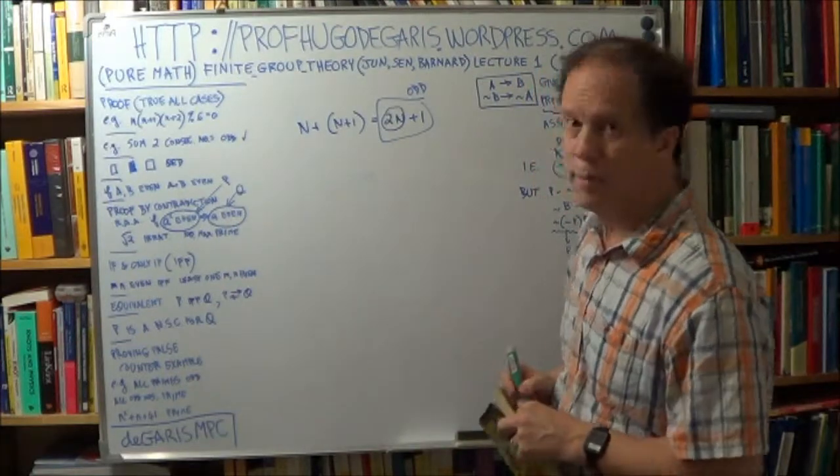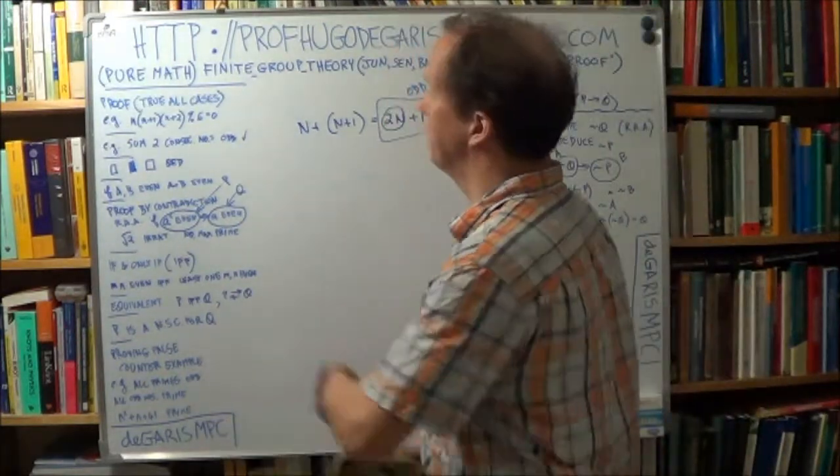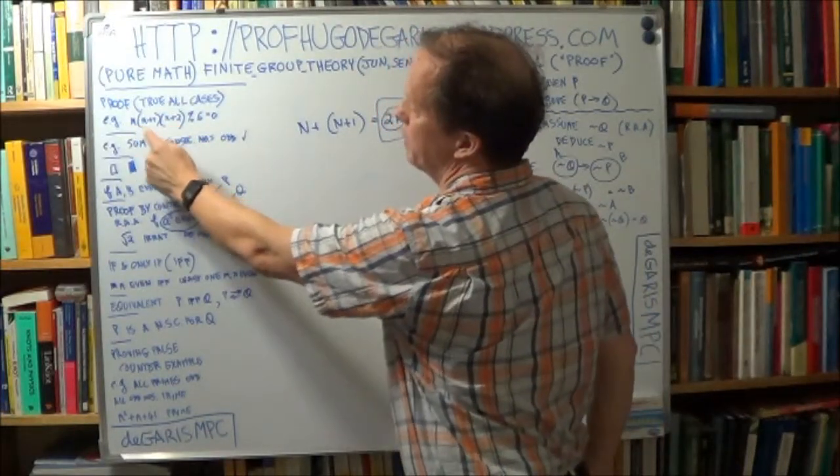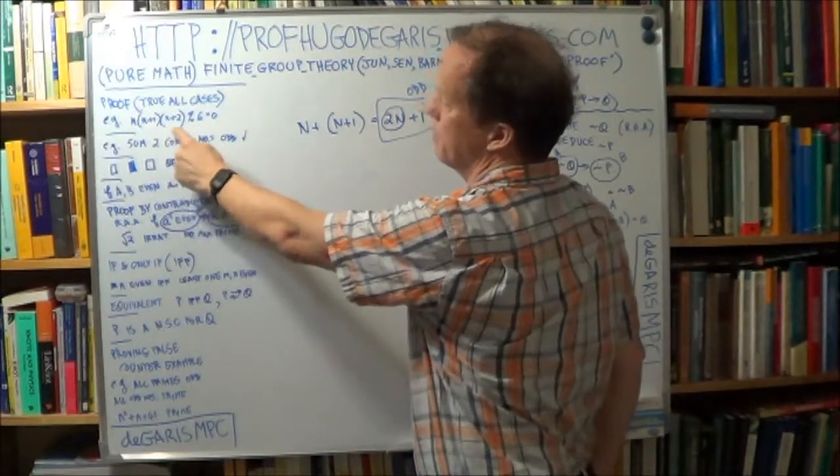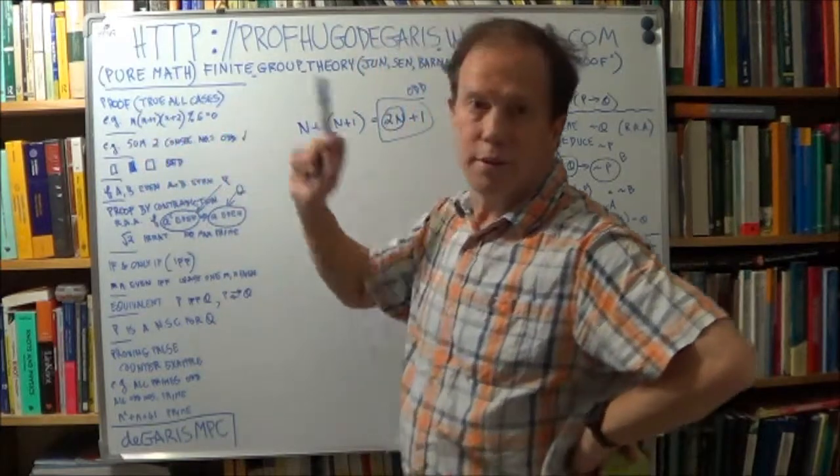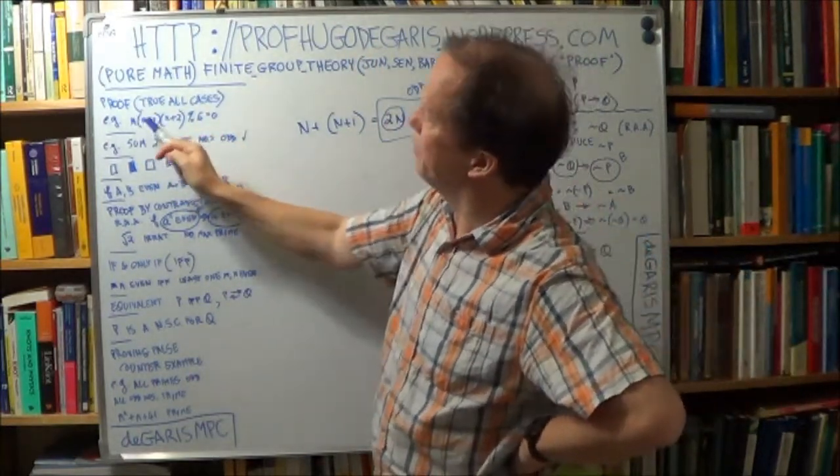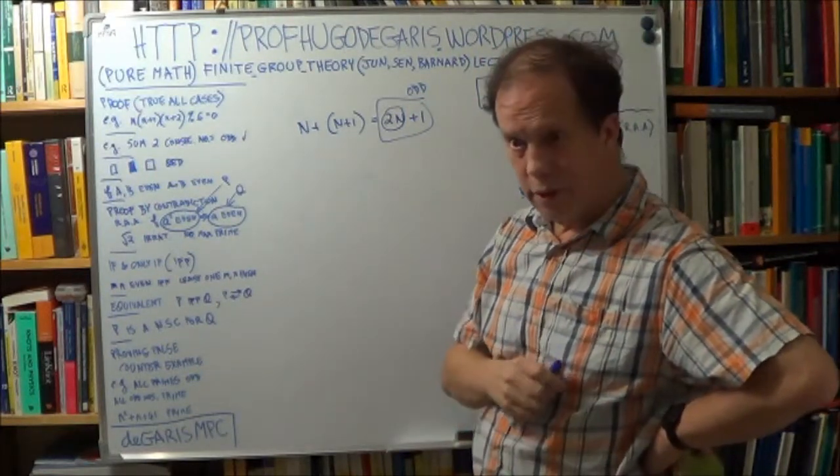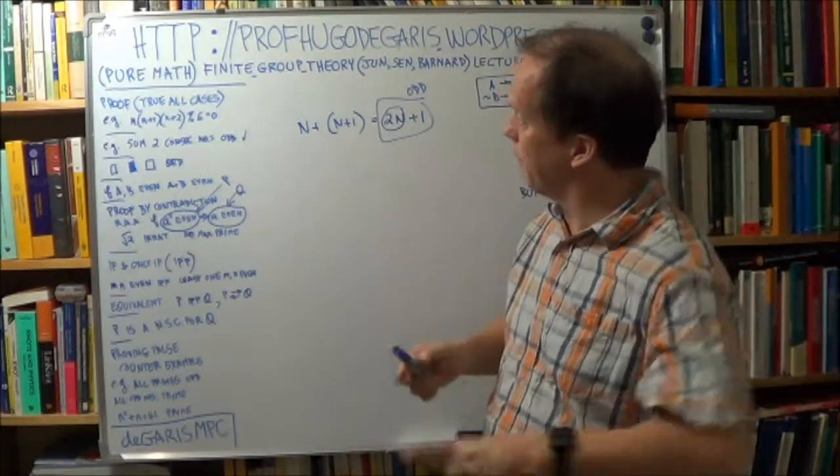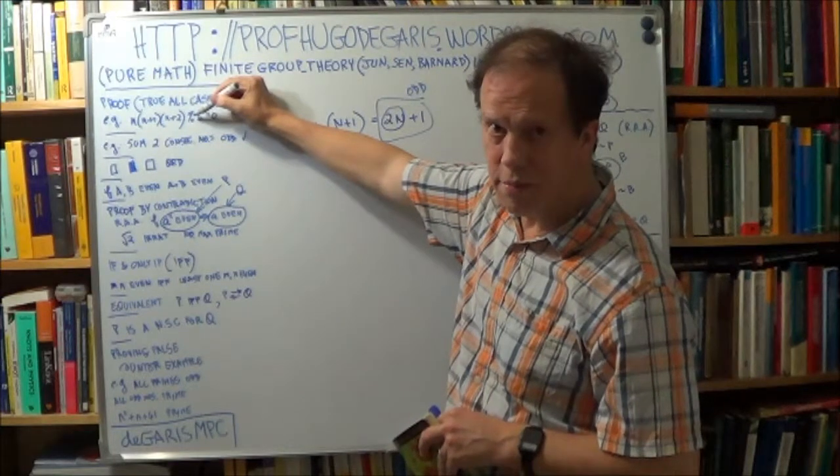Now, let's try something a little bit harder. Take the product of any three consecutive integers, right? So of the form n times n plus 1 times n plus 2, and the speculation is that that product, the result of multiplying these three consecutive integers together, you can divide that by 6.